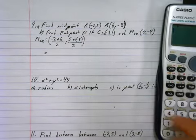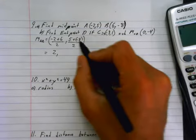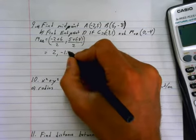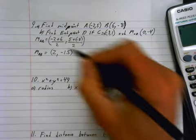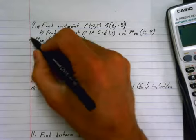Equals... Well, that goes to 4 divided by 2 is 2. And that goes to negative 3 over 2 is negative 1.5. There's midpoint AB. There's part A.